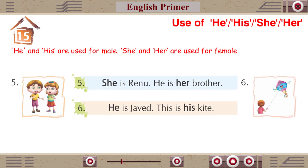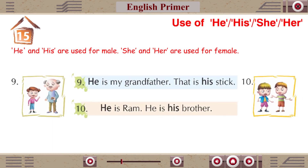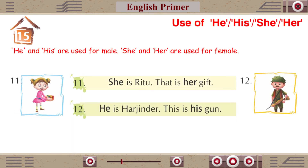She is Renu. He is her brother. He is Javed. This is his kite. She is Rina. That is her frog. She is my mother. This is her purse. He is my grandfather. That is his stick. He is Ram. He is his brother. She is Ritu. That is her gift.